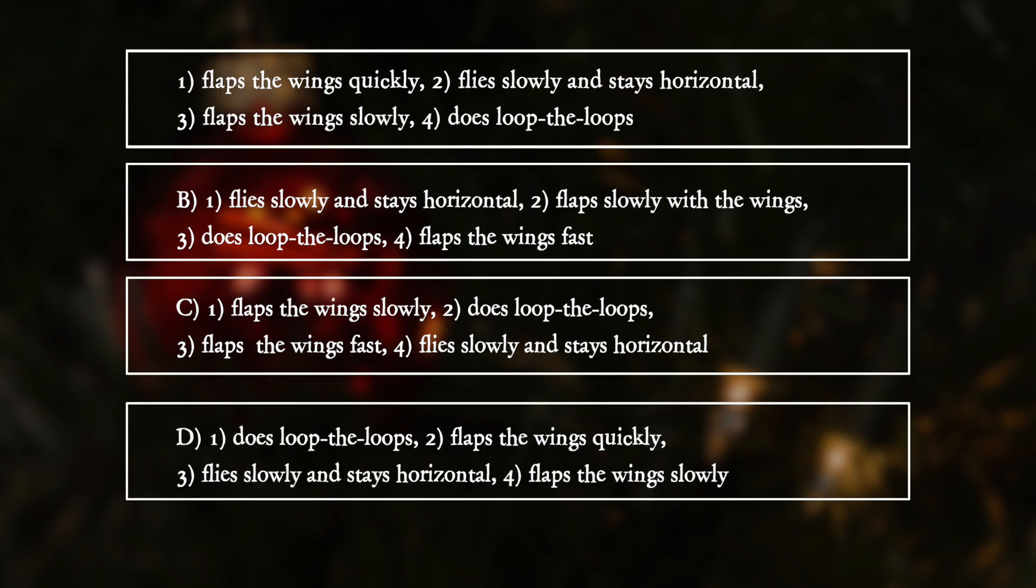D: 1 does loop-the-loops, 2 flaps the wings quickly, 3 flies slowly and stays horizontal, 4 flaps the wings slowly.